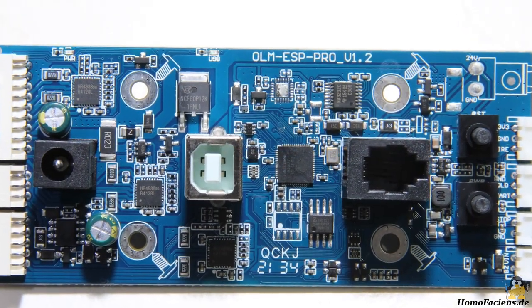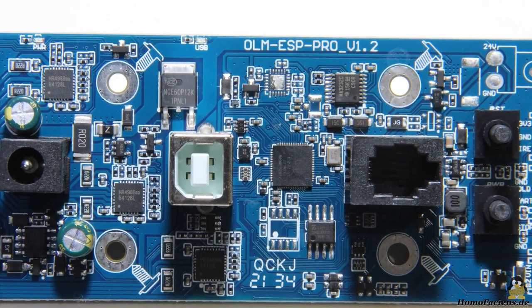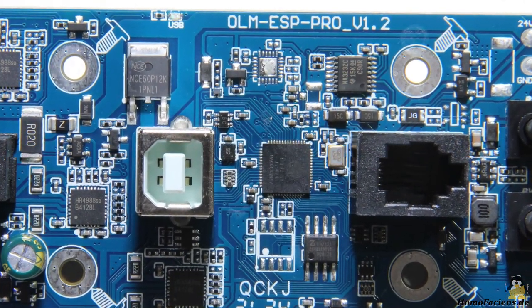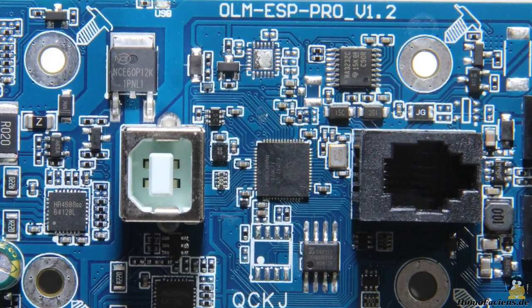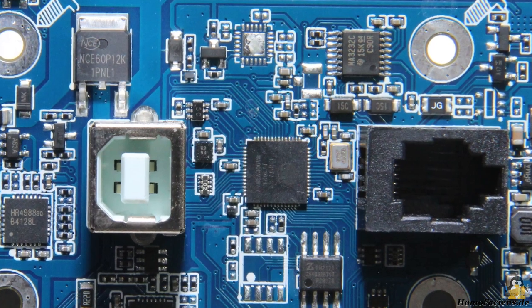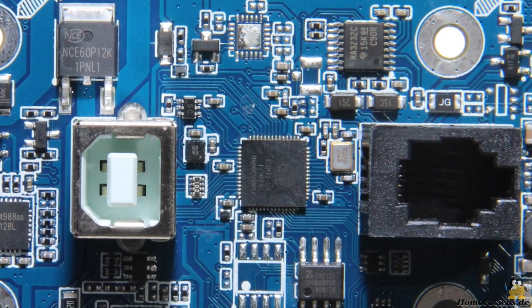The machine is controlled by a mainboard with an ESP32 microcontroller. Grbl runs on this CPU so that the machine can be operated with open source software. That's how it should be. Devices with closed source firmware will no longer enter my workshop.